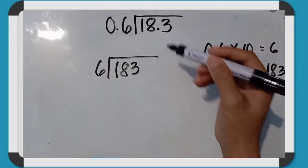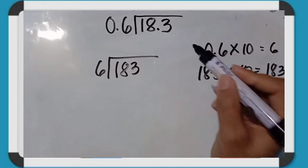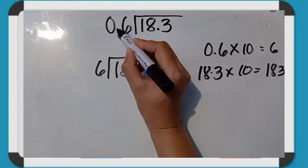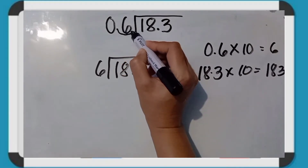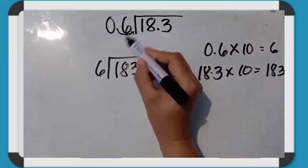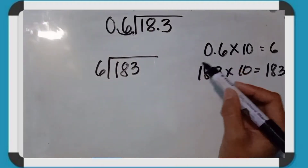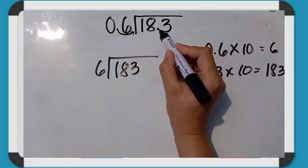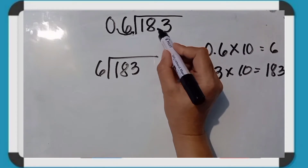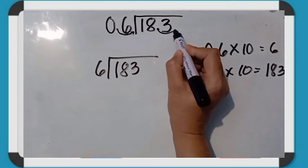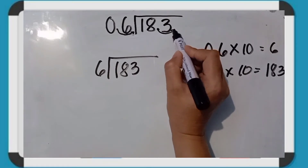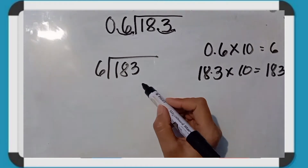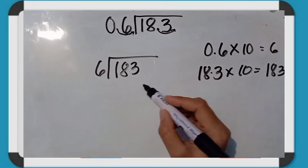Using the shortcut method, we move the decimal point one place to the right. For the divisor, 6 tenths becomes 6. For the dividend, 18 and 3 tenths becomes 183, since the decimal point moves one place to the right of the 3. Now let's proceed to division.